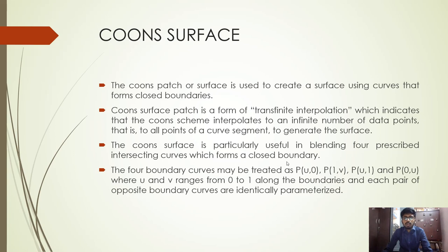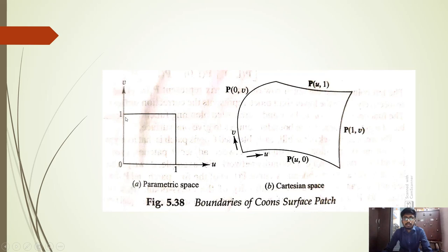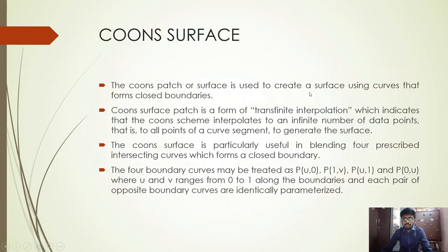The Coons surface has four closed boundary curves along the U and V directions. The first image represents the parametric space and the second image represents the Cartesian space. The four curves are P(0,V), P(1,V) along the V direction, and P(U,0) and P(U,1) along the U direction. The four boundary curves may be treated as P(U,0), P(1,V), P(U,1), and P(0,U), where U and V range from 0 to 1 along the boundaries.